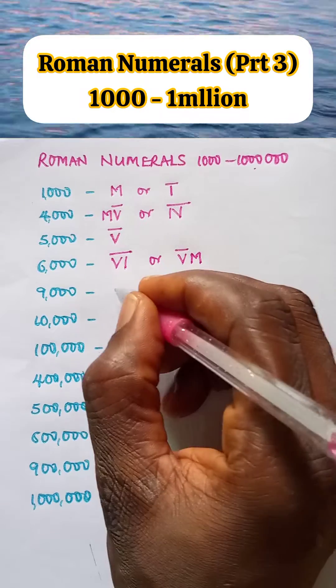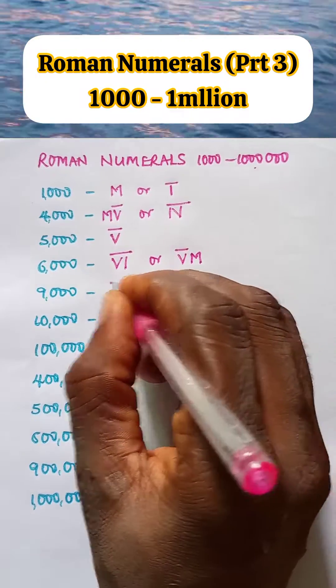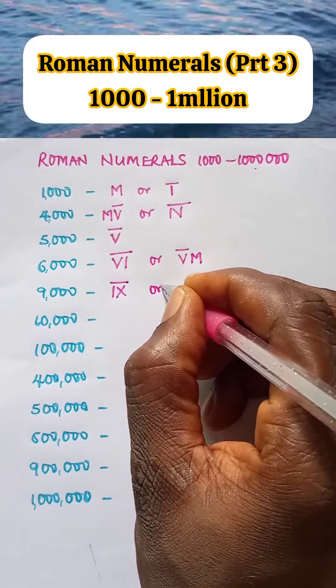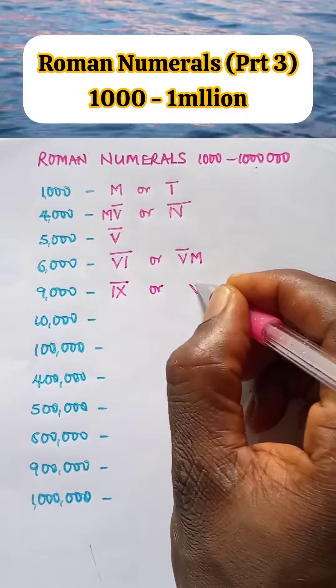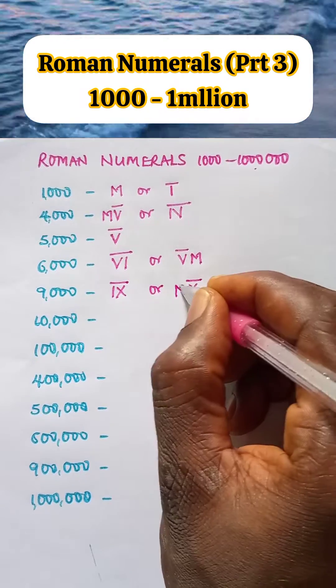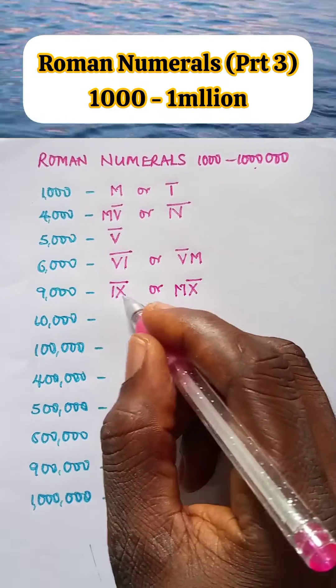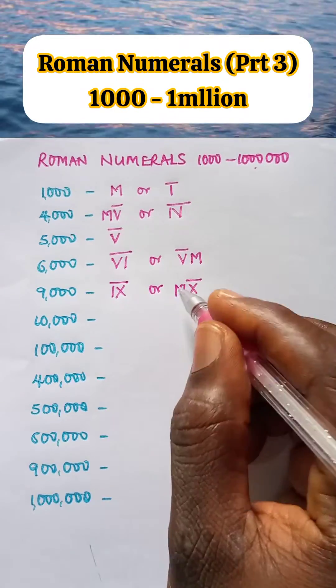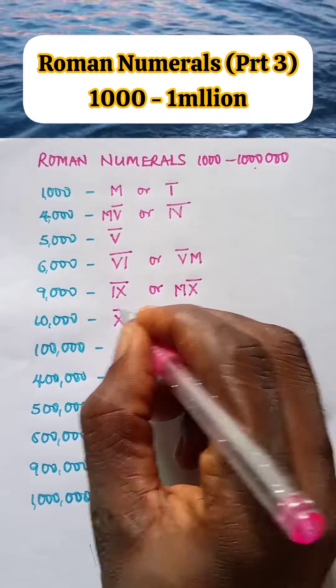Nine thousand is IX bar, which is nine thousand, or X bar which is ten thousand minus M which is one thousand. So nine thousand is IX bar or MX bar. Ten thousand is X bar.